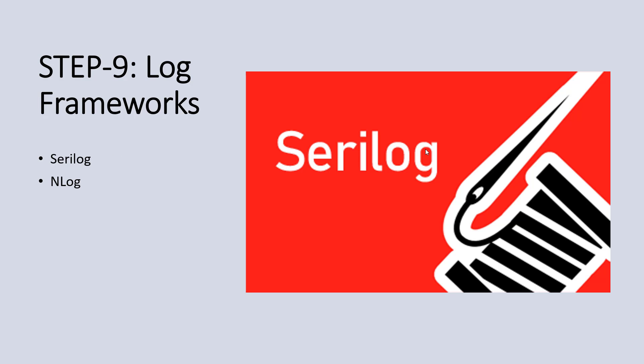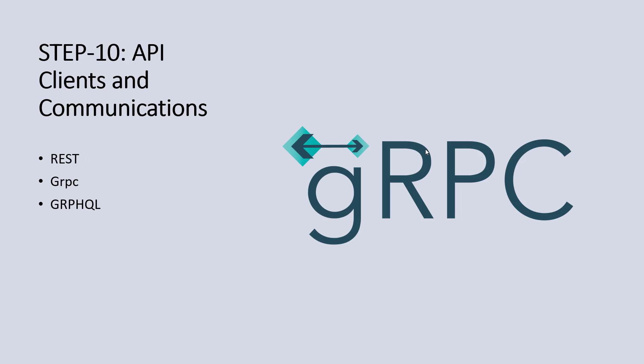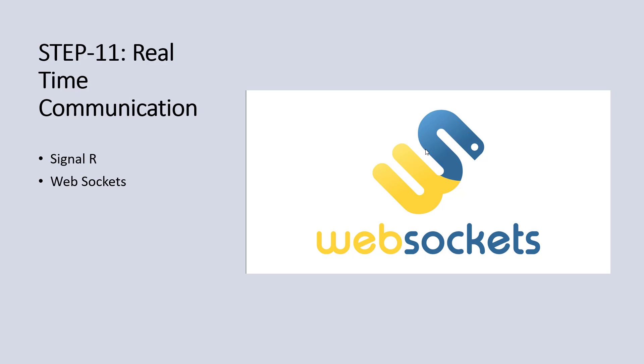Step 9 is logging frameworks — Serilog and NLog. Step 10 is API clients and communication, including REST services, gRPC for real-time communication, and GraphQL, which overcomes REST's multiple-endpoint drawback by using a single endpoint. For real-time communication, learn SignalR and WebSockets. SignalR is a wrapper over WebSockets, server-sent events, and long polling, and has strong compatibility with Microsoft technologies.